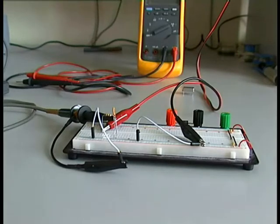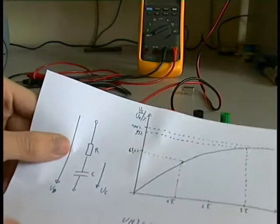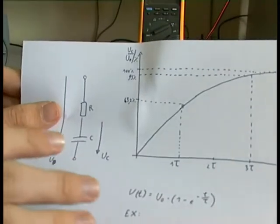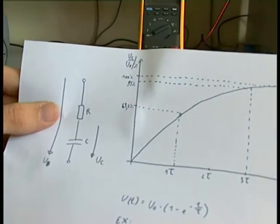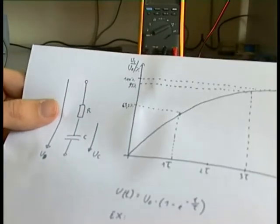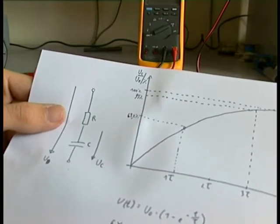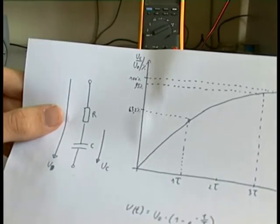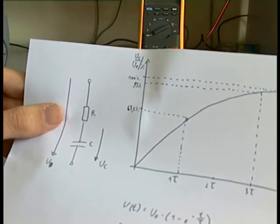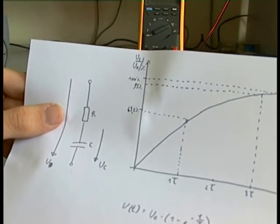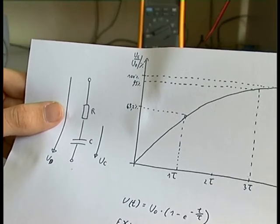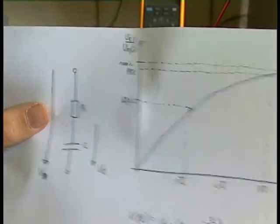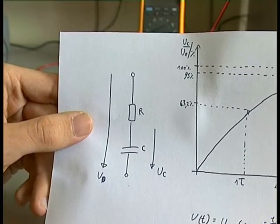Hello and welcome to a short video about measuring the capacity of a capacitor with an oscilloscope. For measuring the capacity of a capacitor with an oscilloscope, you don't need an LCR meter or a multimeter which is capable of measuring capacitance. So this comes quite useful.